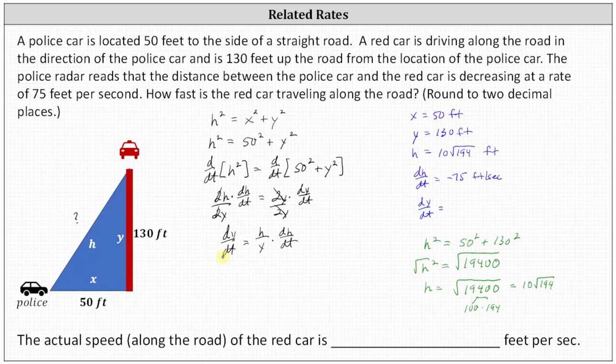And now we can determine dy/dt because we know the values of H, Y, and dH/dt. Under the given conditions, dy/dt is equal to H, which is 10 square root 194, divided by Y, which is 130, and then times dH/dt, which is negative 75 feet per second.